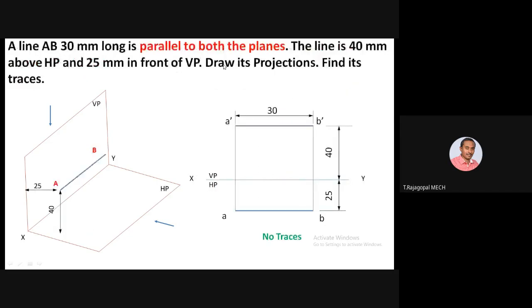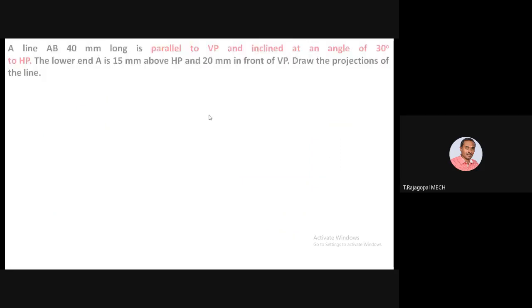If a line is parallel to both planes, extending it in any direction still keeps it parallel to both planes, so there are no traces at all. For a line inclined to one plane and parallel to VP: since it is parallel to VP, there is no vertical trace. Since it is inclined to HP, a horizontal trace can be obtained.